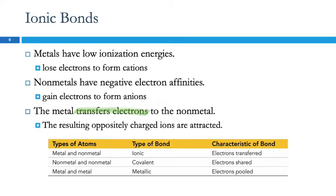This little table just summarizes the different types. The ionic bond — we have electrons being transferred, and these types of bonds happen between metals and nonmetals. We already know that because we learned to name things — ionic compounds are a metal and a nonmetal.